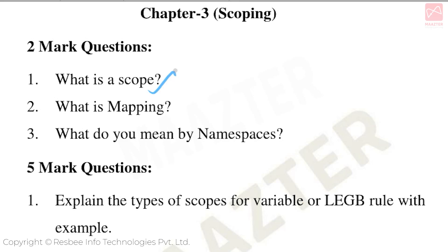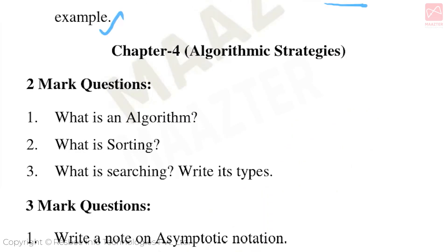Chapter 3: Scoping. Important 2-mark questions: What is a scope? What is mapping? What do you mean by namespaces? Important 5-mark questions: Explain the types of scopes for variables using the LEGB rule with example. The LEGB rule is a definite must-see question in this chapter.